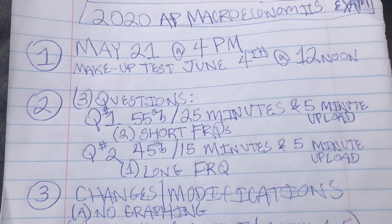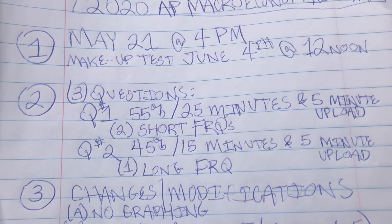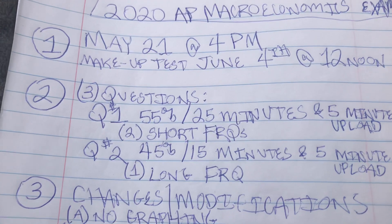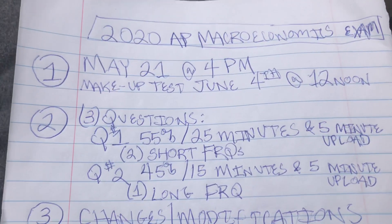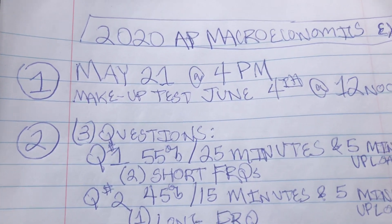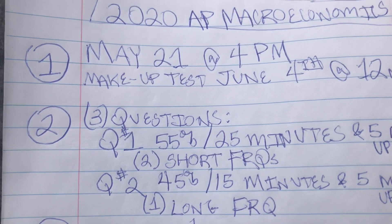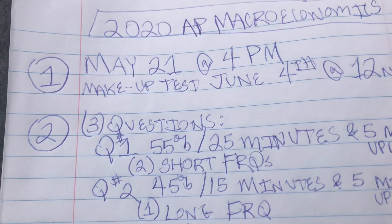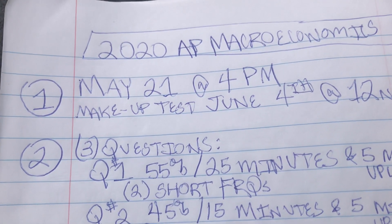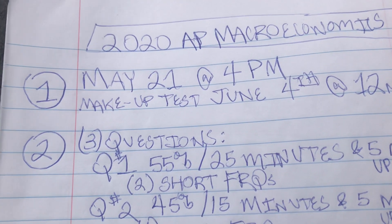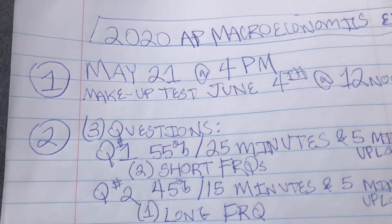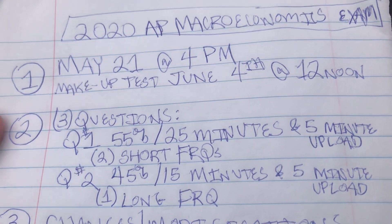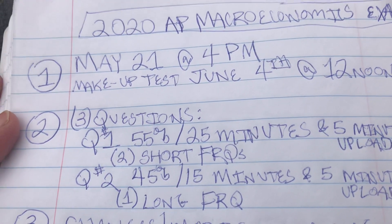Let's take a look at the 2020 test format. You're going to have to do three free response questions. Question 1 is going to be 55% of the test — 25 minutes in total along with a 5-minute upload period. Even though it's labeled Question 1, there will be two short free response questions within it; that's how questions 2 and 3 on the free response typically went in previous years. My guess is one will be medium size taking about 15 minutes and one smaller taking about 10 minutes. Question 2, which is more like the previous Question 1 from years ago, will count 45% and will be a 15-minute question along with a 5-minute upload. This is our traditional long free response question.